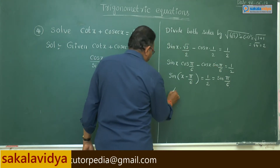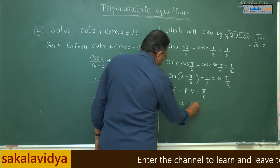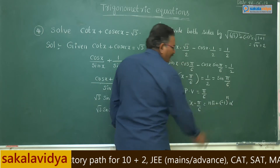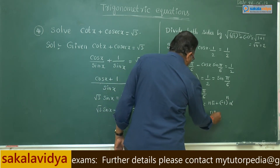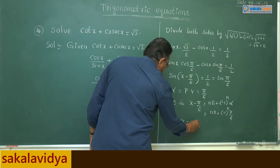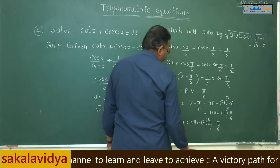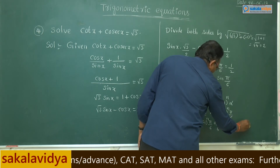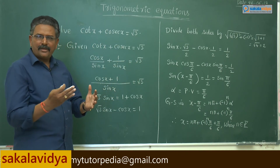Here alpha equals the principal value, that is π/6. The general solution is x minus π/6 equals nπ plus minus 1 to the power of n times alpha, where alpha is replaced by π/6. Therefore, x equals nπ plus minus 1 to the power of n times π/6 plus π/6, where n belongs to the integers.